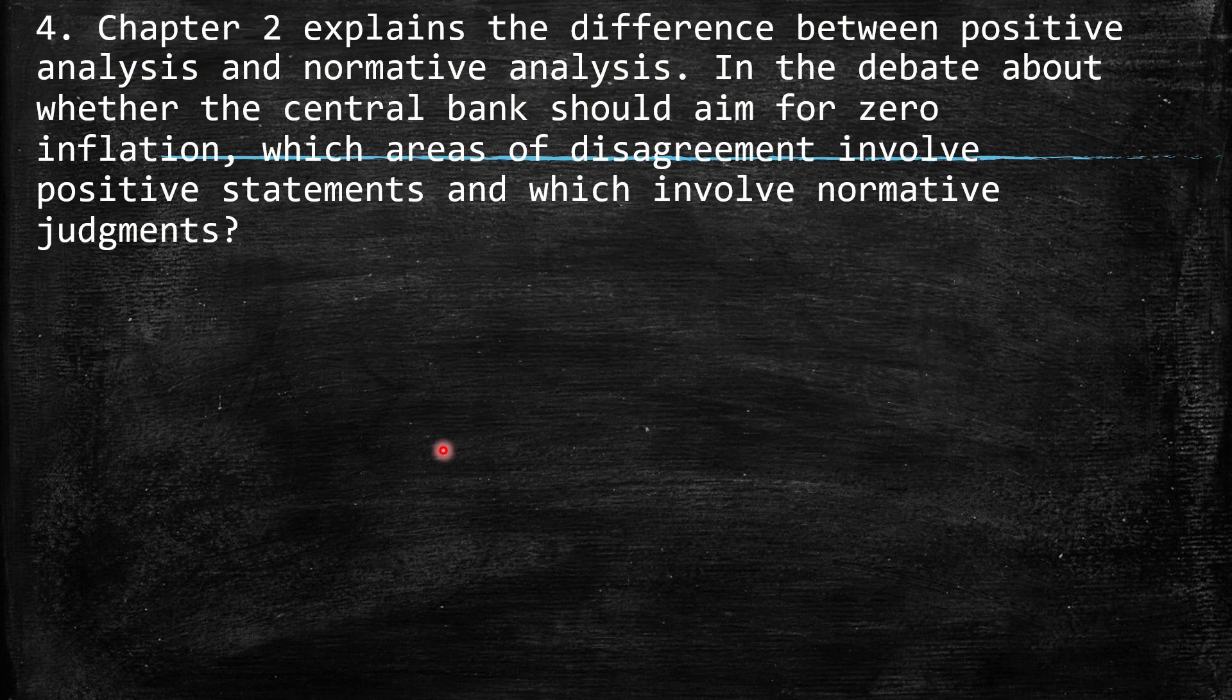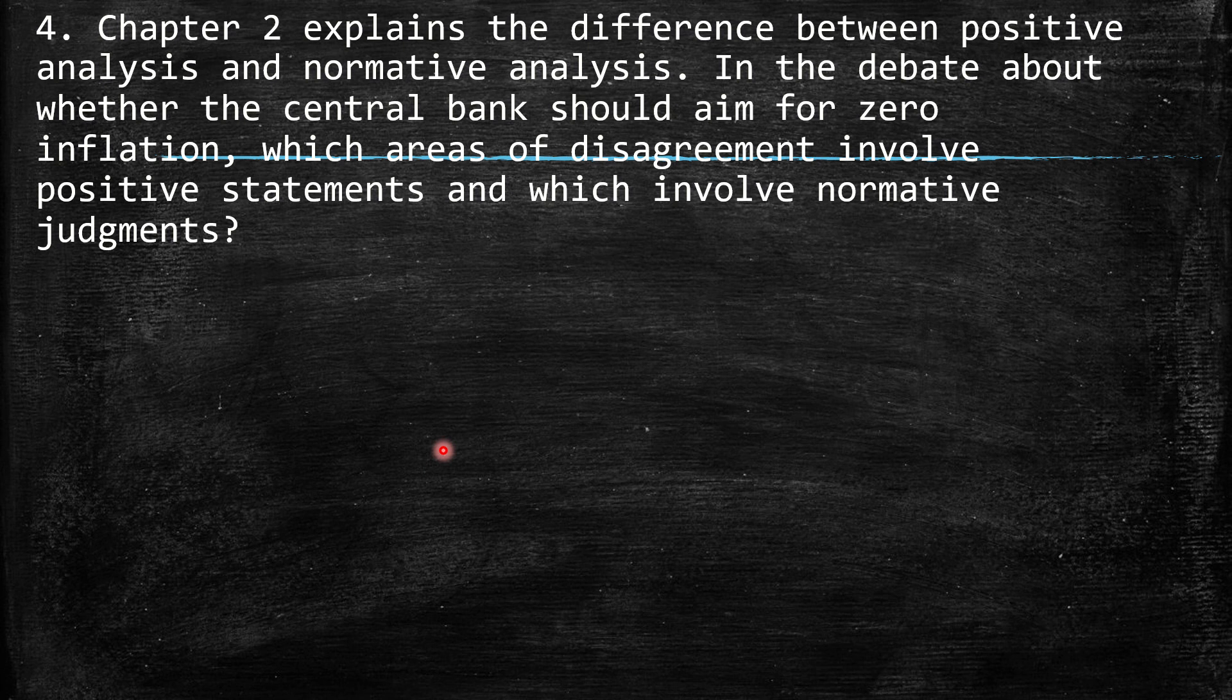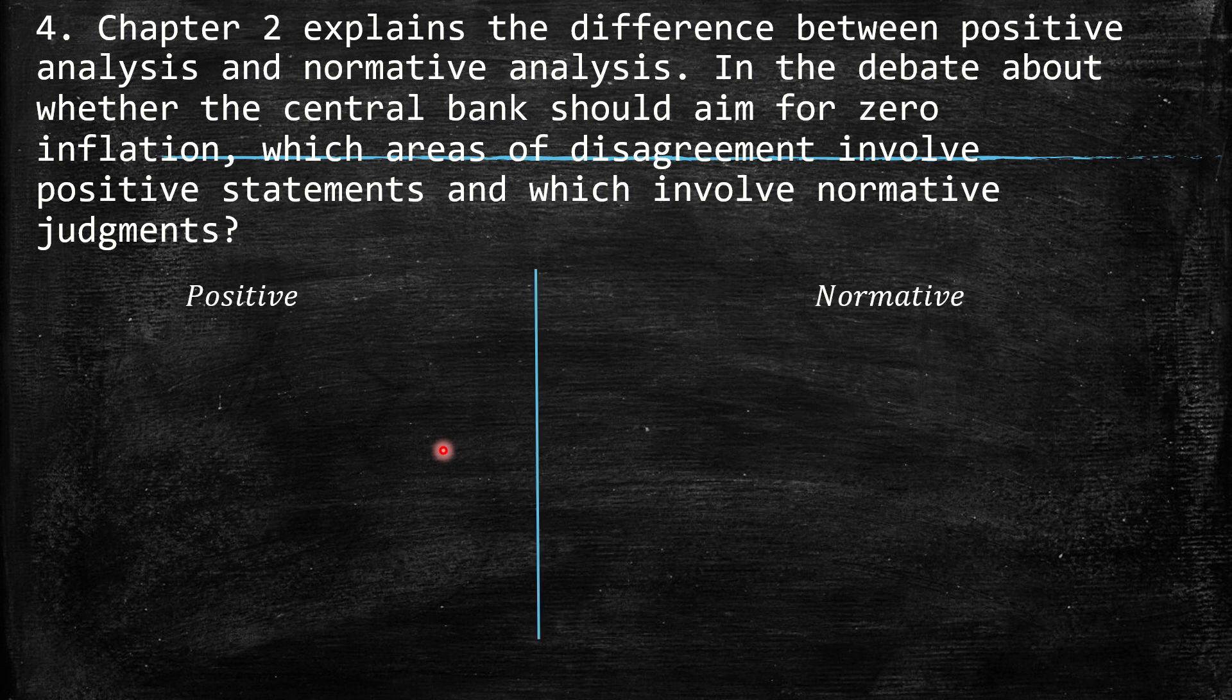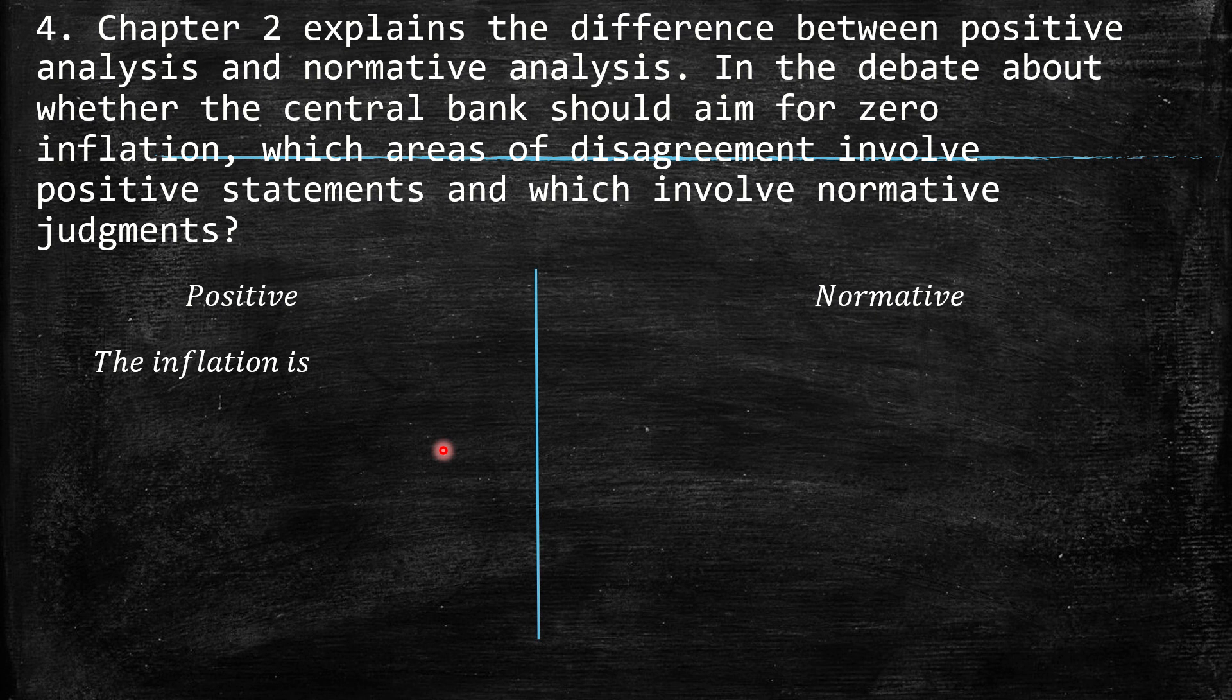Four, chapter two explains the difference between positive analysis and normative analysis. In the debate about whether the central bank should aim for zero inflation, which areas of disagreement involve positive statements and which involve normative judgments. So, here, I split in these two. When we talk about positive, we are saying that the inflation is 4%. The change in inflation from the third quarter compared with the third quarter of the previous year has increased 2%. This is positive, it's something that is a fact. Something normative is like the debate that is in this specific question in macroeconomics. If the zero-bound inflation is better, well, this is a point of view where, actually, this is not really 100% true because it depends. So, definitely, this should be a normative argument.